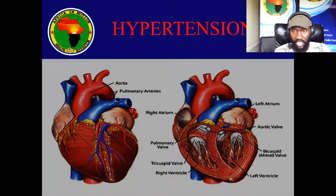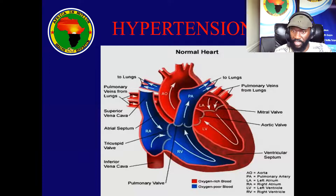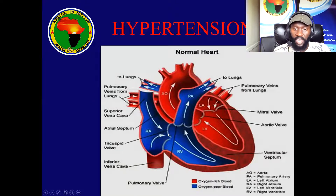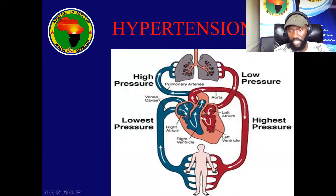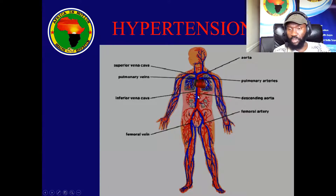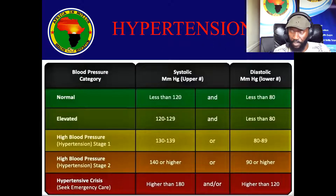We need to understand that our engine — the heart — needs to be in good condition, and the pipes — the vessels — need to be in good condition as well, along with the fluid inside, which is blood. The heart should be normal; its valves, the doors or gates that open and close inside the heart, should be functioning well so that blood flows from the heart to the whole body — to the lungs, the upper limbs, the head, and the lower limbs. The vessels are all over the body: big ones, medium ones, and small ones.